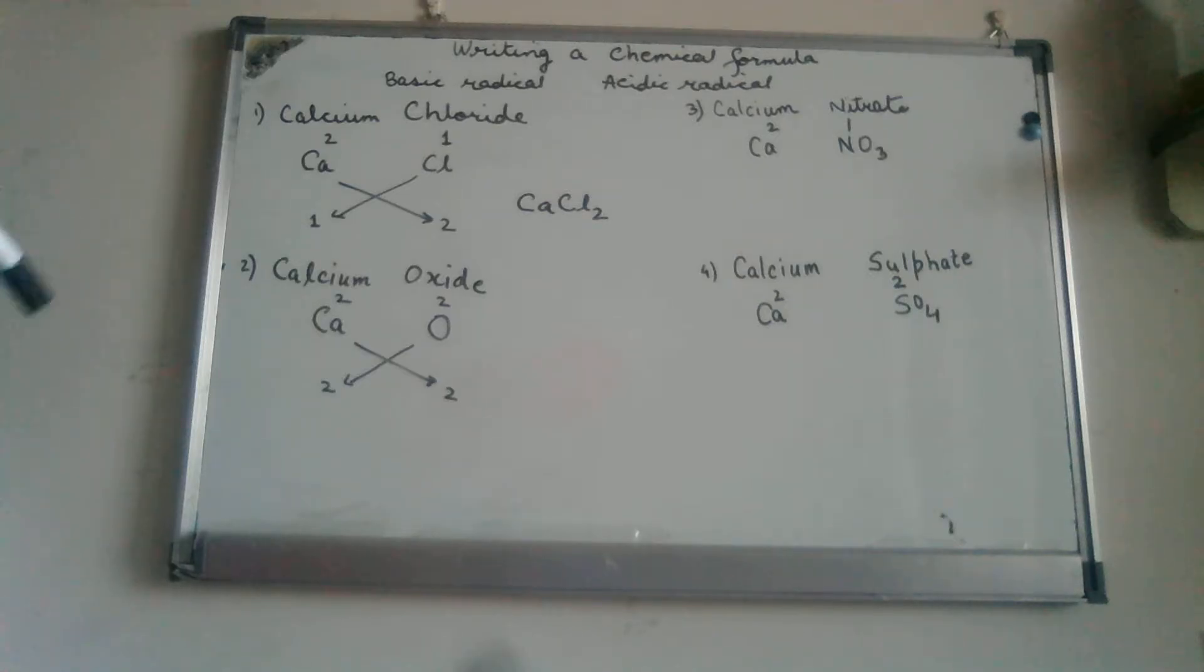Here we have taken four examples. The first one is a very simple one, calcium chloride. The first part is my basic radical, the second is the acidic radical. We write the symbol capital C small a, chloride capital C small l. Calcium with a valency of 2, chloride with a valency of 1. We cross the valencies and we get the formula of calcium chloride as CaCl2.